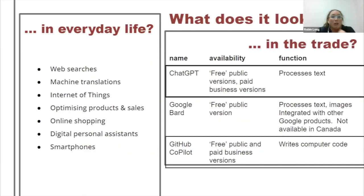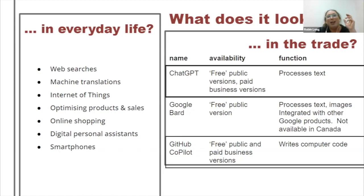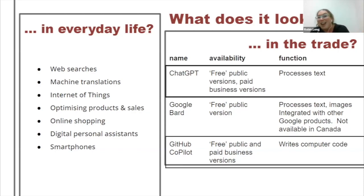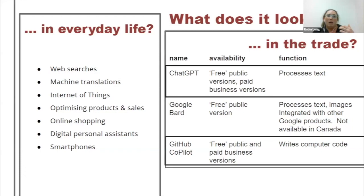What it looks like in our life is all over the place right now. Anytime we use a web search, anytime we have any device connected to the internet, when we're online shopping, when we text somebody, 'Hey, are you going on holidays to the Caribbean?' and then all of a sudden our Facebook page is populated by trips to the Caribbean — that's AI. Our phones are pretty much AI. Looking at office-type trades, ChatGPT is the one that everybody's using right now, and it processes text.